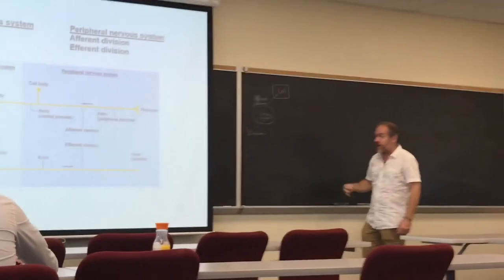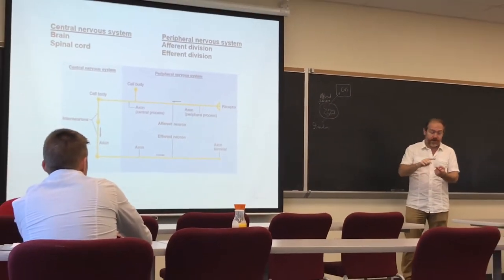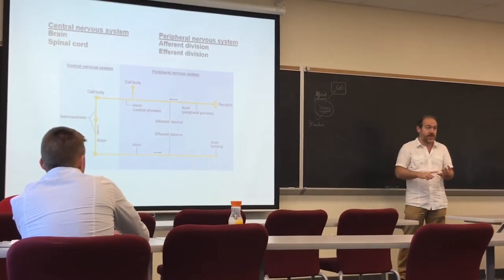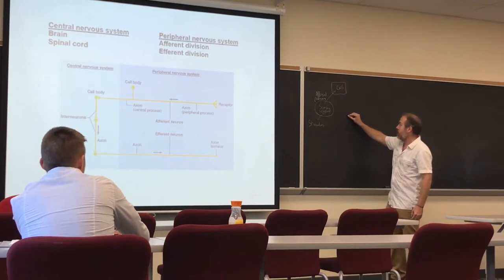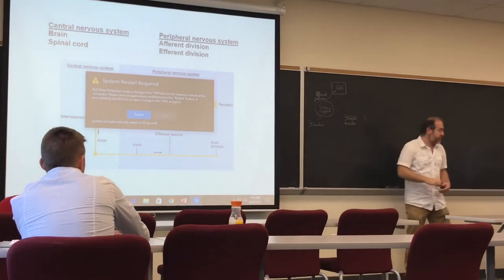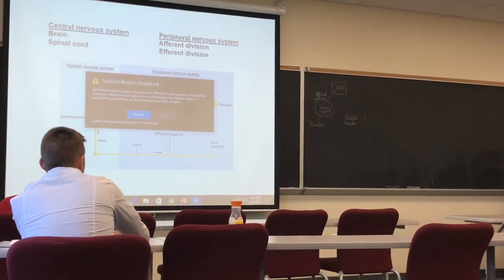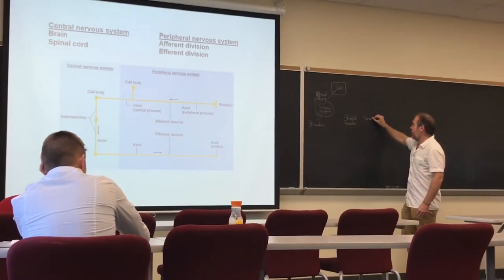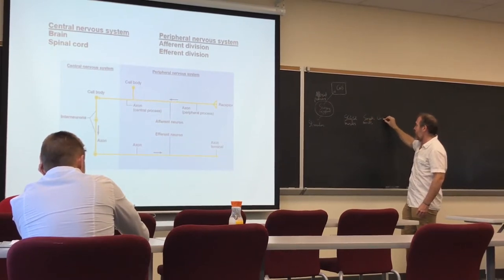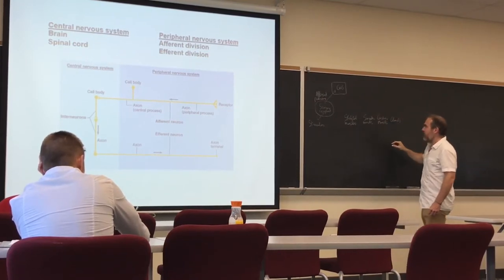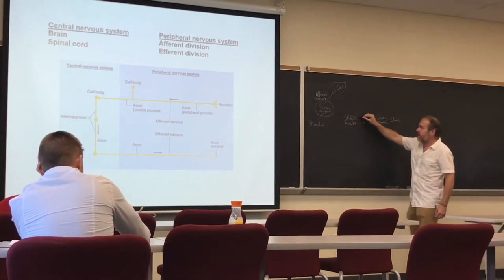All the organs in the body pretty much have either glands or muscle. This muscle can be skeletal muscle, smooth muscle, or cardiac muscle. So those are going to be the possible effectors — skeletal muscles, smooth muscle, cardiac muscle, or glands.